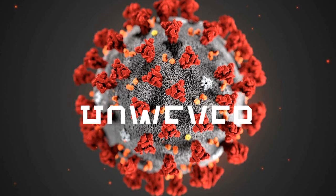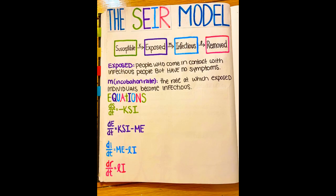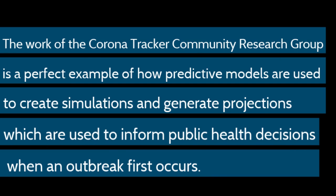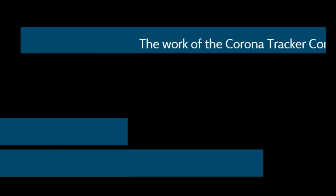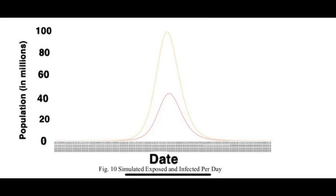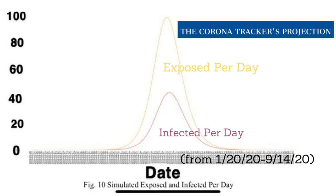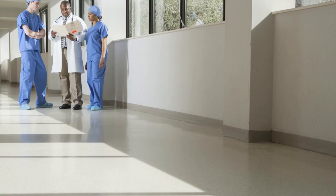The SIR model is a simple and effective predictive model. However, amidst the COVID-19 pandemic, the SEIR model, which is based upon the SIR model, has been more commonly used to account for the incubation period of COVID-19. A simulation based upon equations from the SEIR model was created to generate a projection of COVID-19 cases and predict the maximum number of cases if no interventions are put in place to slow the spread.